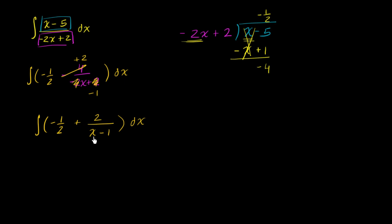Now, how do we evaluate this? The antiderivative of negative one-half is straightforward—that's just going to be negative one-half x. But what's the antiderivative of 2 over x minus 1?